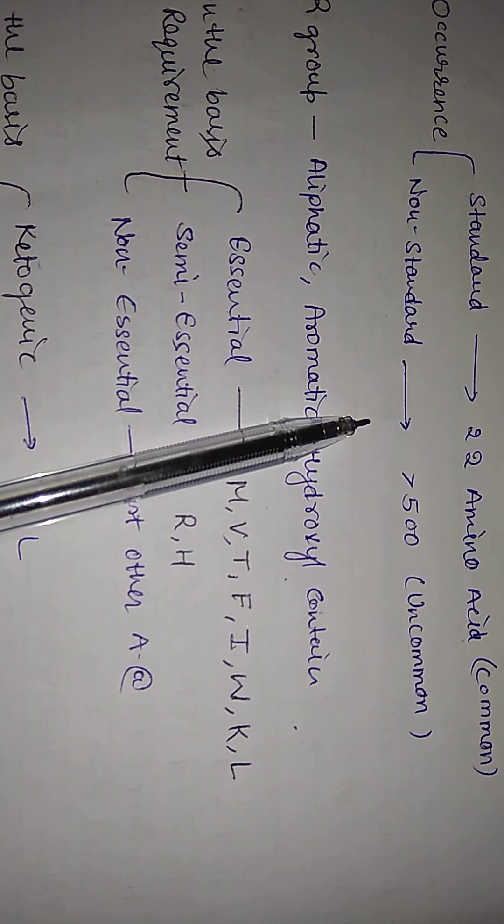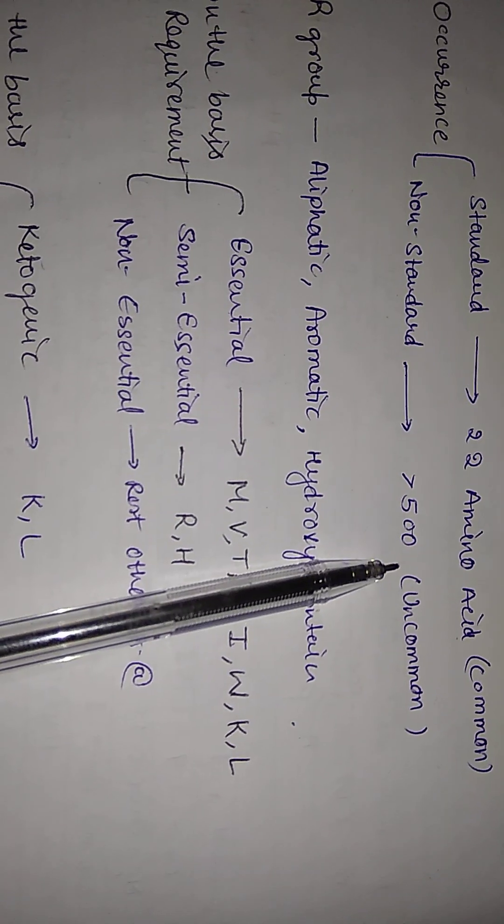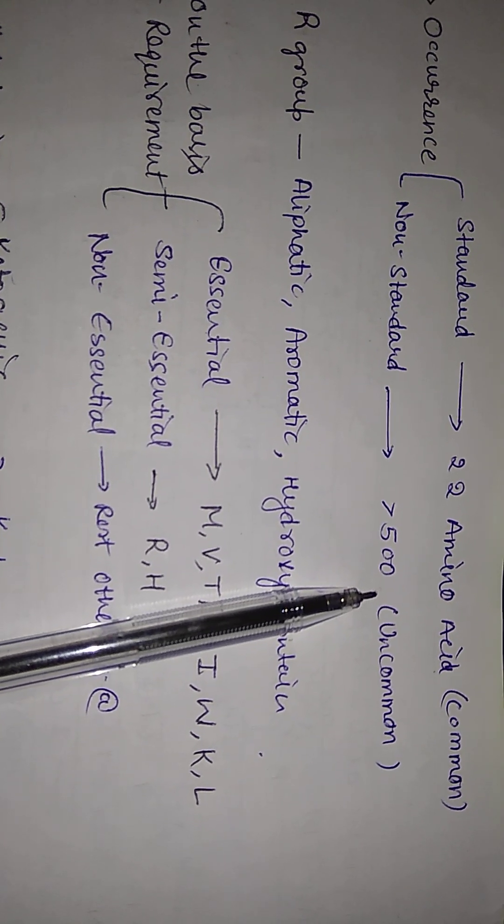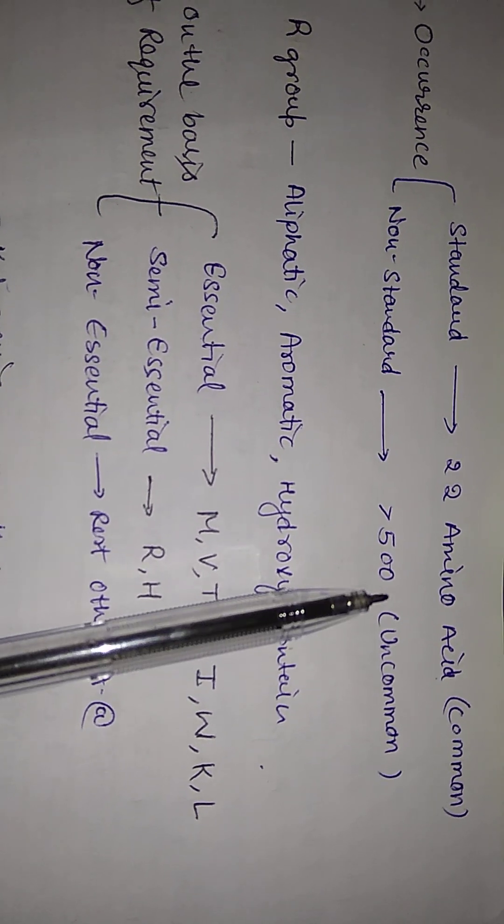Non-standard are more than 500, which are uncommon. We can see them in polypeptides after post-translational modification.